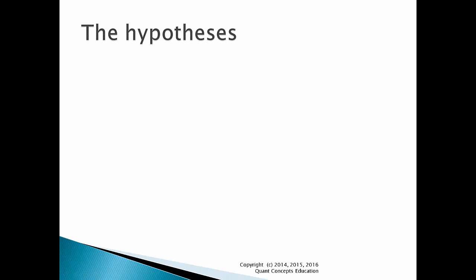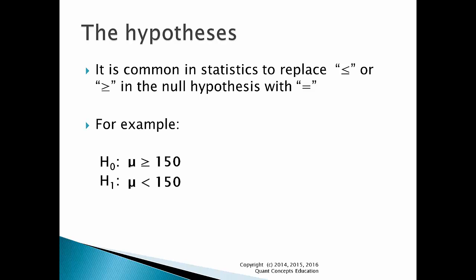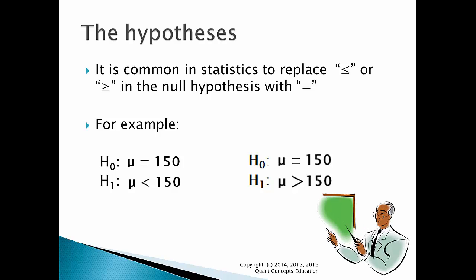The hypotheses we've just set out may look slightly different from the ones in your course or textbook. This is because it is common in statistics to replace the less-than-or-equal-to and the more-than-or-equal-to signs with an equal sign. For example, if the null hypothesis is that the population average is larger than or equal to 150, and the alternate hypothesis is that the average is less than 150, we can replace the larger-than-or-equal-to sign in the null hypothesis with an equal sign. Both null hypotheses are correct. Similarly, we can replace the less-than-or-equal-to in another null hypothesis with an equal sign. It's best to use a convention that your teacher or textbook prefers, though technically both methods are correct.